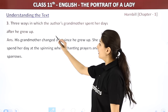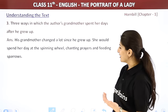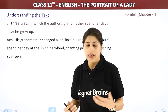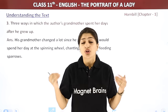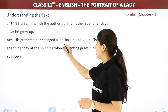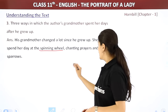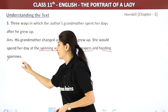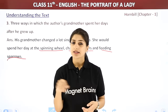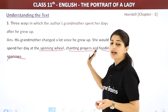The third question asks how the author's grandmother spent her days after he grew up. She changed a lot. She would spend her entire day at the spinning wheel, chanting her prayers. She also spent about half an hour each day feeding breadcrumbs to the sparrows. These three activities — spinning, praying, and feeding sparrows — defined her daily routine.